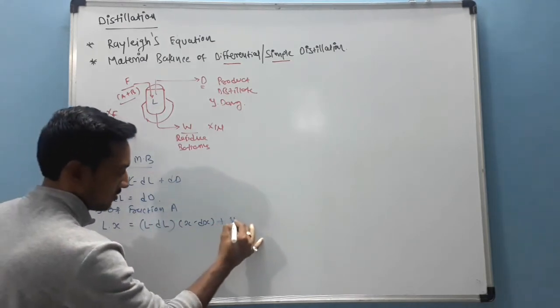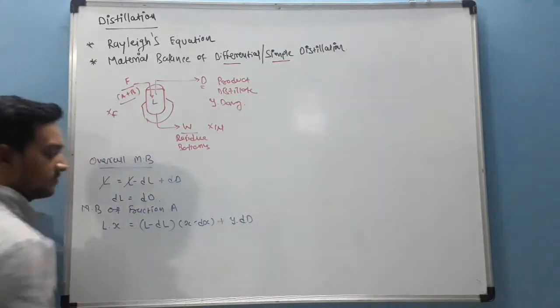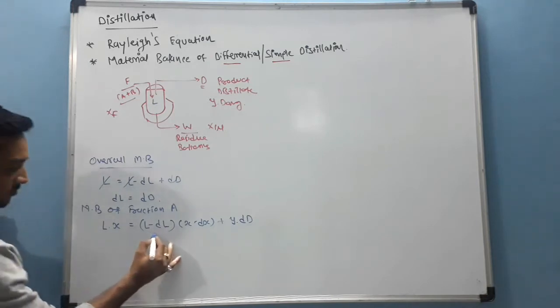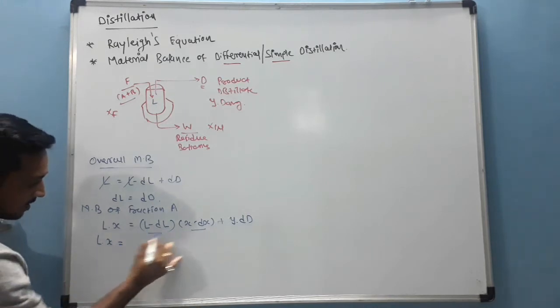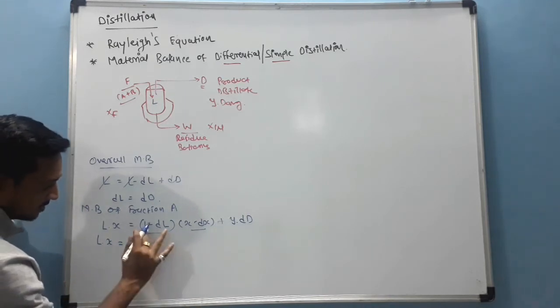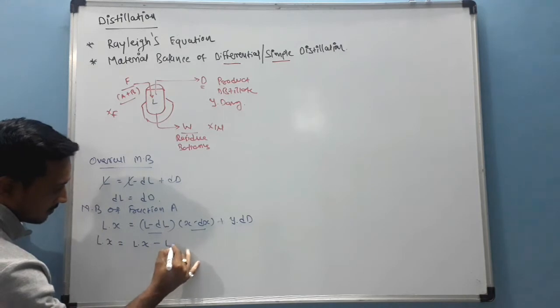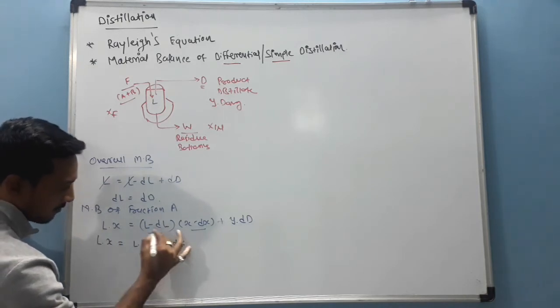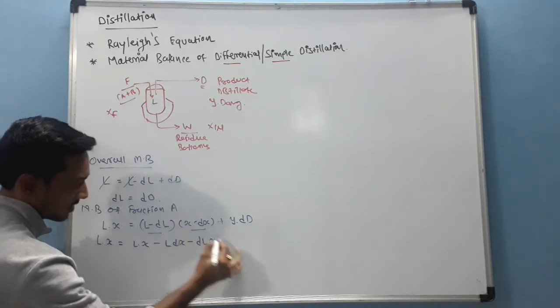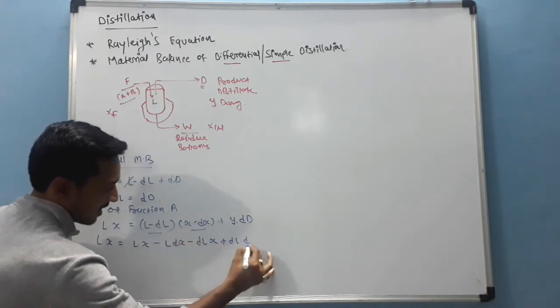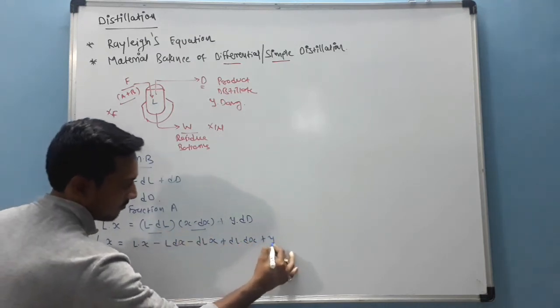Now plus Y into DD. So we have to open the bracket. L into X is equal to L into X minus LDX minus DLX minus DLDX plus YDD.